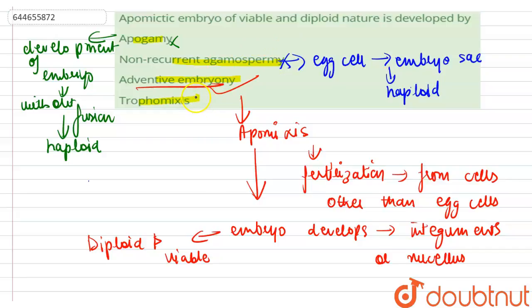Triple fusion is the fusion involving two polar nuclei and the sperm nucleus that occurs in double fertilization in a seed plant, and it results in the formation of endosperm. This is also the incorrect option. The correct option for this question is adventive embryony.